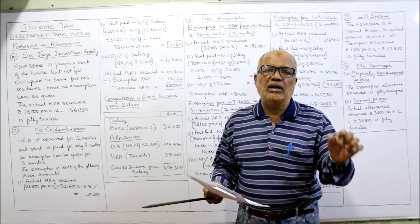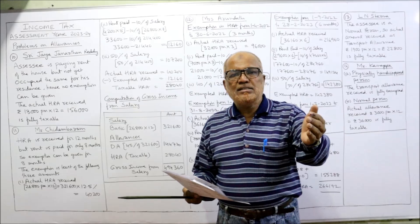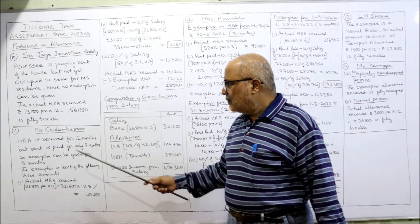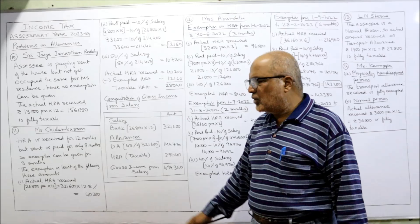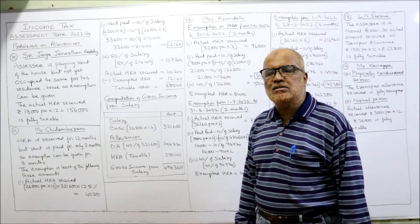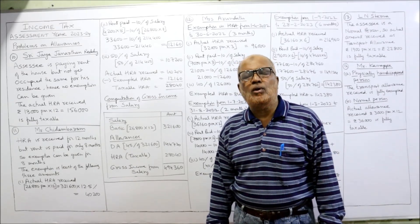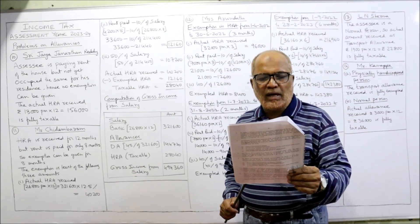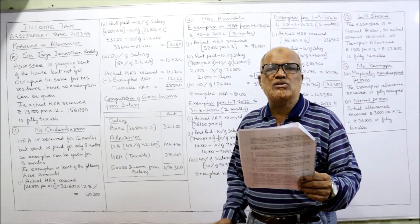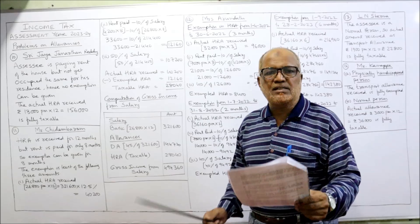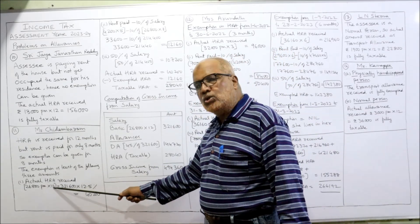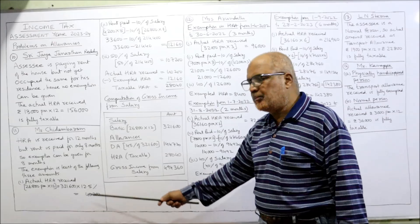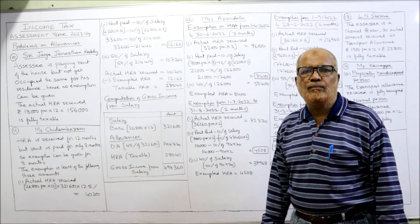Here rent is paid only for eight months, so exemption can also be given only for eight months, not for 12 months. He has received the HRA for 12 months but paid the rent only for eight months. So exemption will be given only for eight months. HRA exemption is the least of the following three amounts. First: actual HRA received = 12.5% of basic. Basic is ₹26,800 per month × 12 = ₹3,21,600 × 12.5% = ₹40,200. This is the actual HRA received.